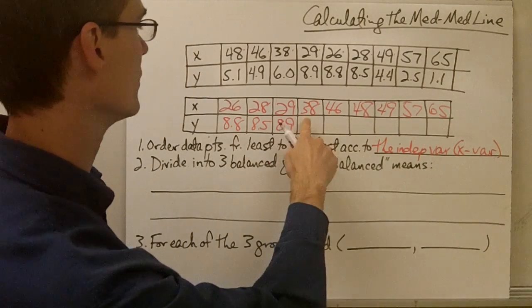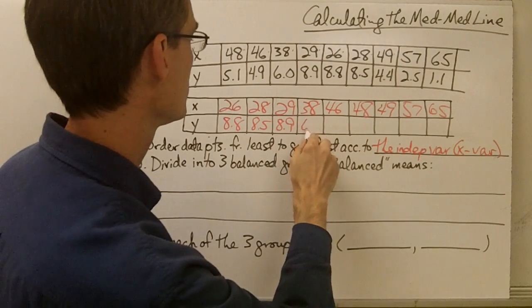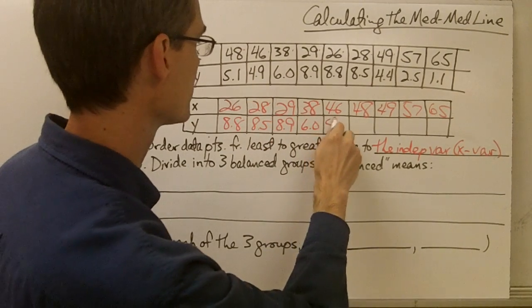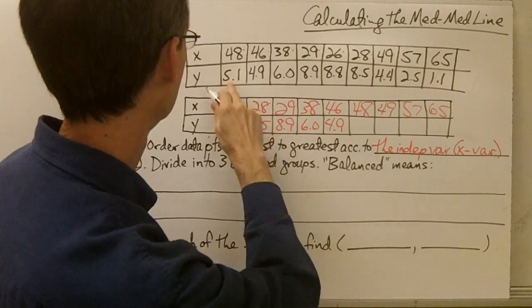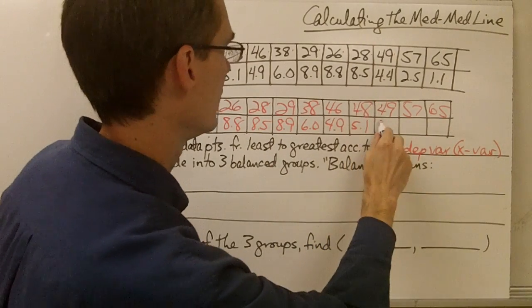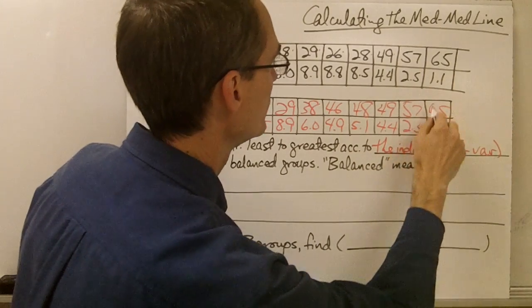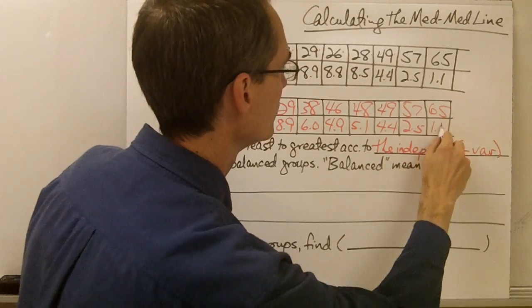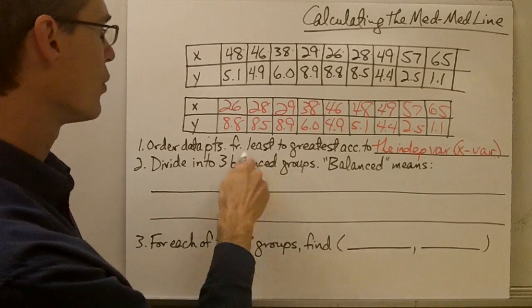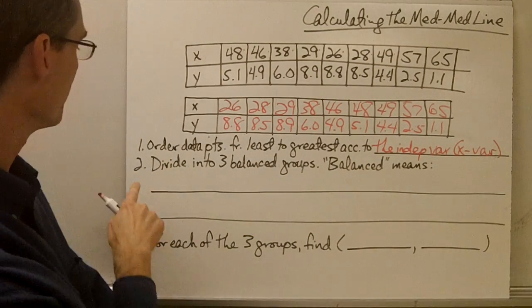Let's keep going: 38 with 6.0, 46 with 4.9, then 5.1, 4.4, 2.5, and 1.1. So I've got all my data points in order from least to greatest according to my independent variable.